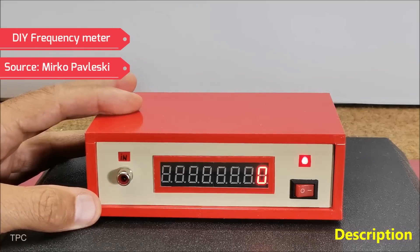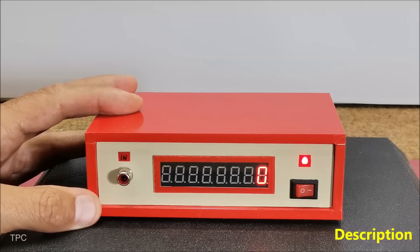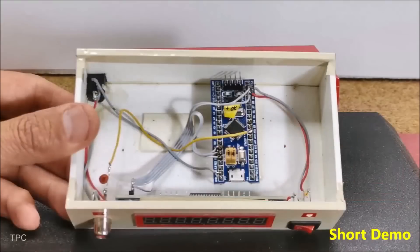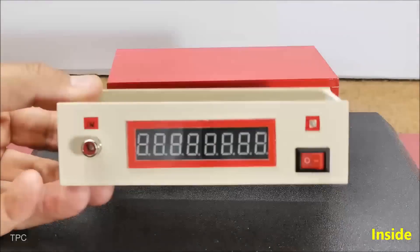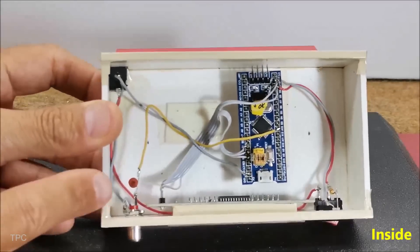Number 11. Our next project is a simple yet highly useful frequency meter that can measure the frequency of oscillating signals. This device is packed into a small PVC box with a seven-segment display and a capacitor for input signal conditioning.